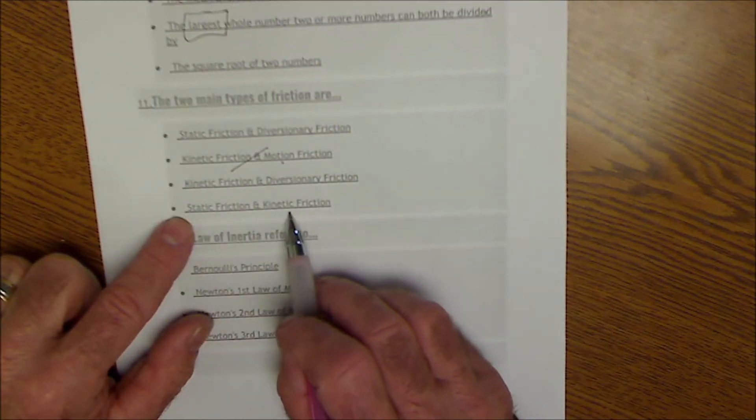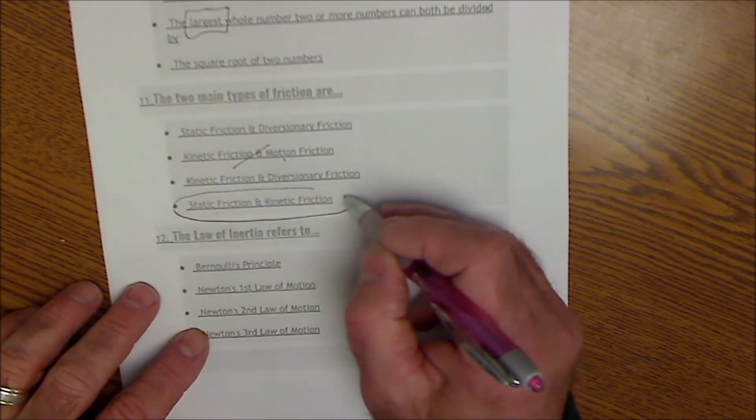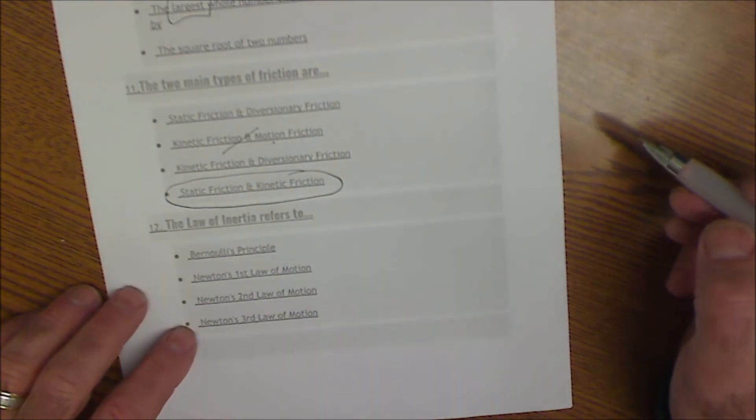But I see on here, I have like a stationary and a movement. And here's stationary and movement friction. So this is the only one that really makes sense. Both static and kinetic friction.